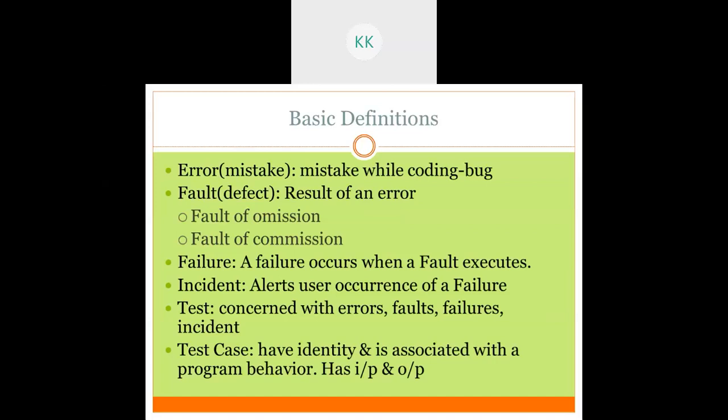Some basic definitions: an error is a mistake made while coding. A fault is a defect resulting from an error — some faults are of commission, some are of omission, meaning you have either omitted some rules or added extra incorrect rules. A failure occurs when a fault executes and the system collapses. An incident alerts the user that an occurrence of failure has happened. Testing is concerned with error, fault, failure, and incident.